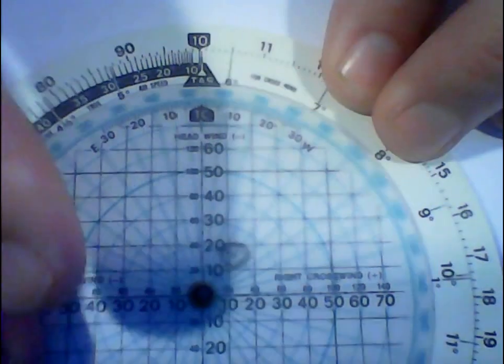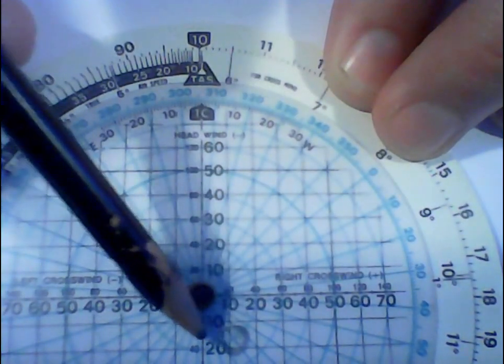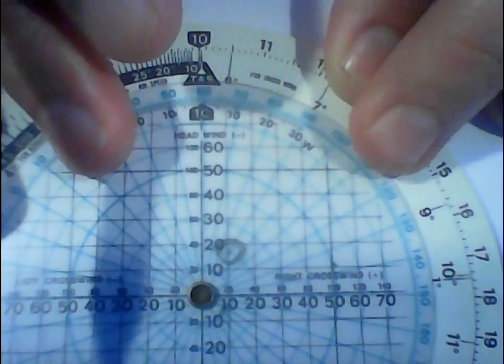So now if that had ended up say around there, that would indicate that we have a tailwind of around about say 14 knots, right. So but anyway, let's just reset this, so it's 060 at the top.